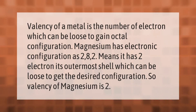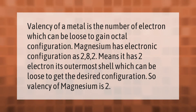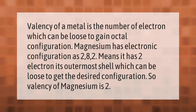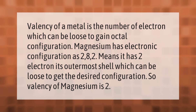Valency of a metal is the number of electrons which can be lost to gain octet configuration. Magnesium has electronic configuration 2,8,2, meaning it has two electrons in its outermost shell which can be lost to get the desired configuration. So the valency of magnesium is 2.